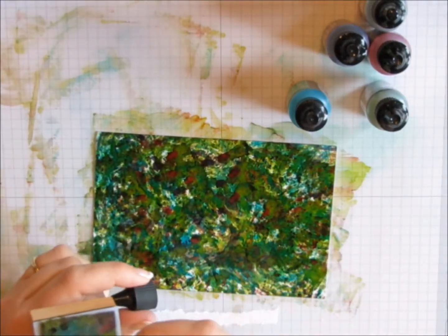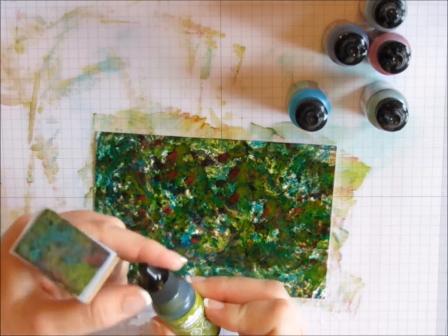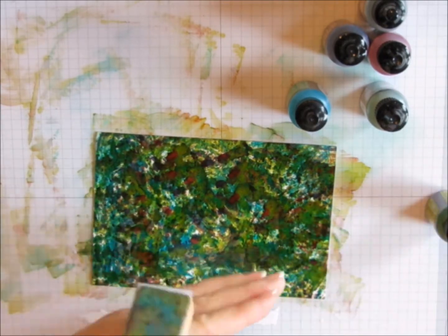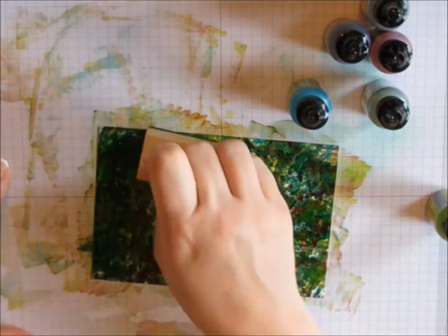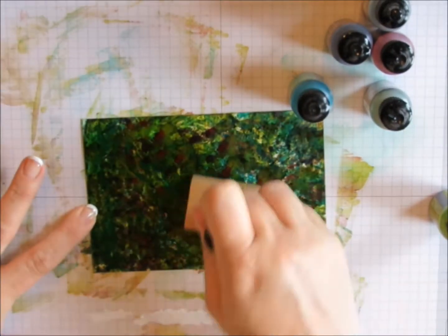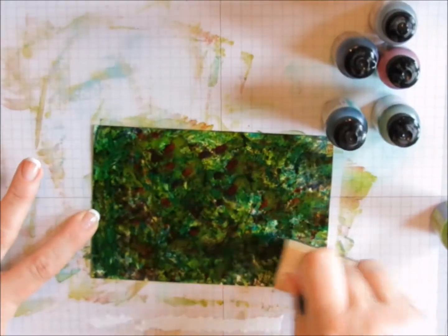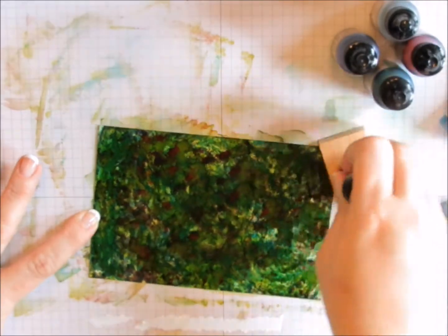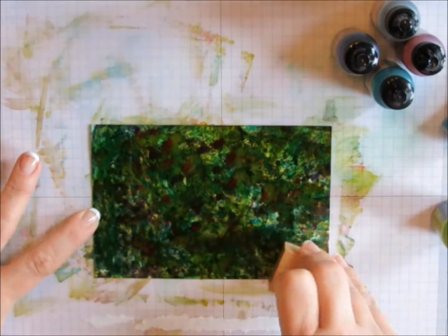When I noticed that I wasn't getting a lot of color, I just added a few more drops of that green alcohol ink. And I filled in the white spaces. And here I start to rub even more because like I said, I wanted the green to be the dominant color in this background.